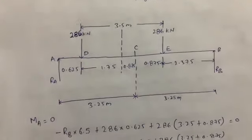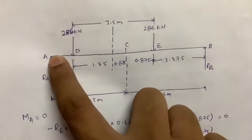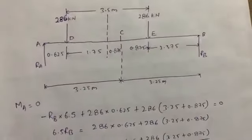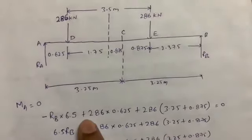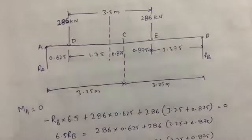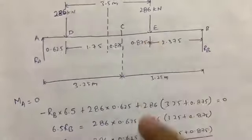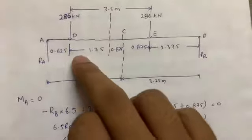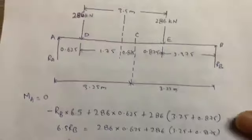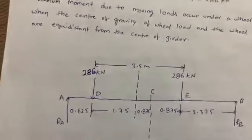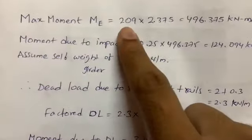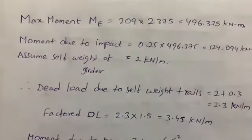Taking moment at A: RB into 6.5 (total distance) equals 286 into 0.625 (clockwise for the E-point load) plus the other wheel load term. After calculating all distances and summing, RB comes out to 209 kN. The maximum moment at E is then force times perpendicular distance: 209 × 2.375 = 496.375 kN·m.